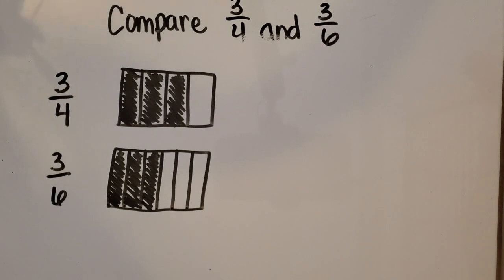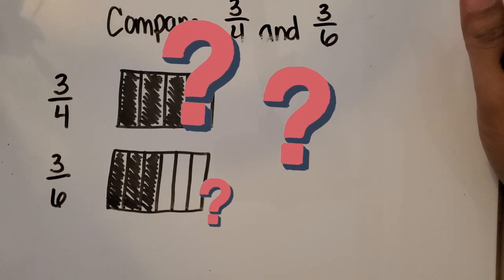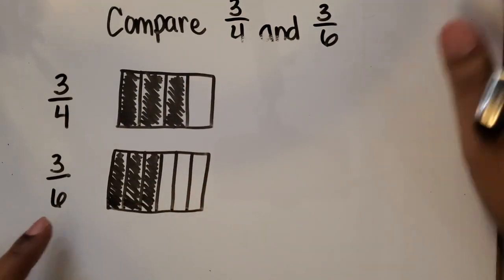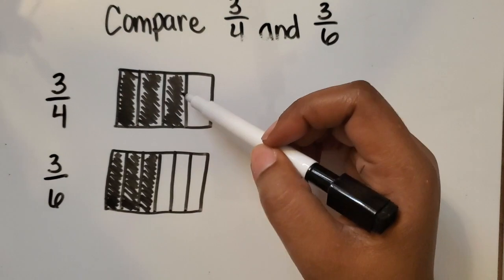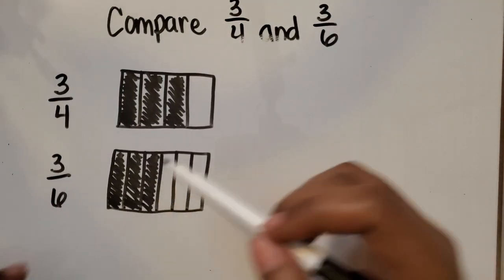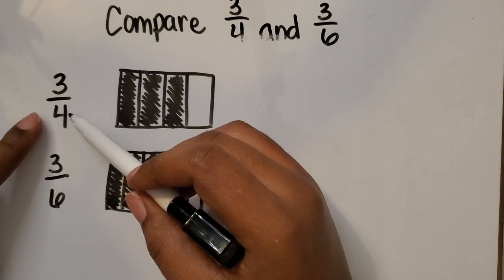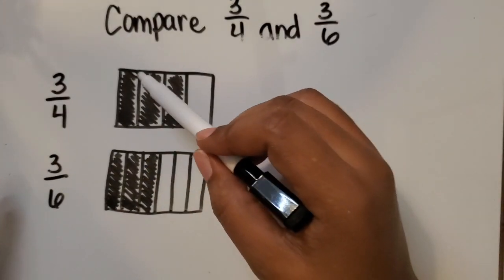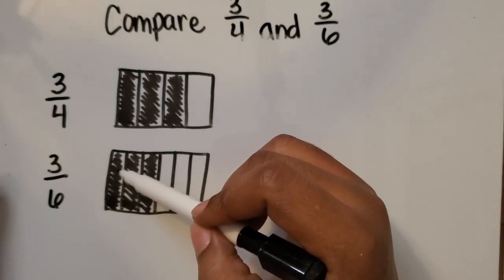So let's look at this. 3 fourths compared to 3 sixths - which fraction has a greater value or takes up more space of that whole? Well, looking at our models, which are the same size whole, we can see that 3 fourths is a greater fraction or greater value than 3 sixths. Even though the denominator 4 is less than 6, the size of those fourths is greater than the size of those sixths.